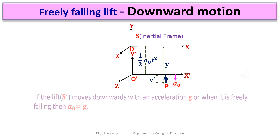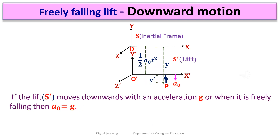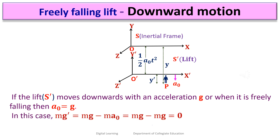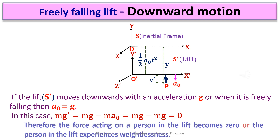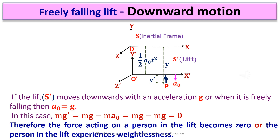If the lift moves downwards with acceleration g, i.e., when it is freely falling, then A0 becomes g. In this case, the apparent weight of a person in the lift becomes mg' = mg minus mA0. Replacing A0 by g gives mg' = 0. Therefore, the force acting on the person in the lift becomes zero, meaning the person experiences weightlessness.